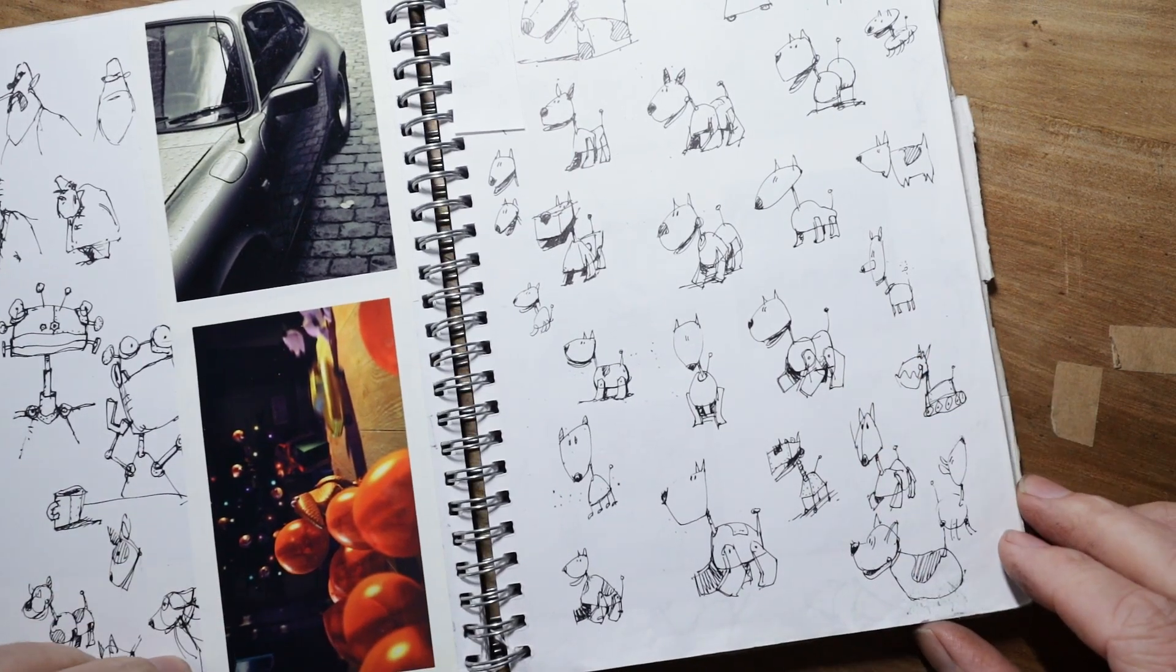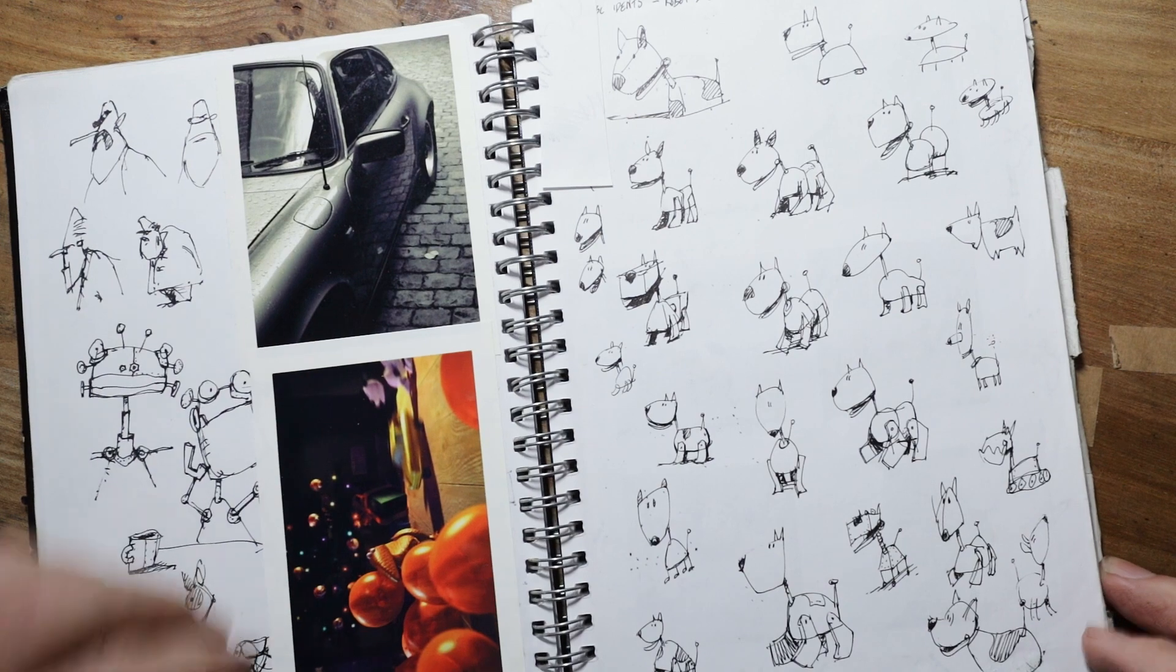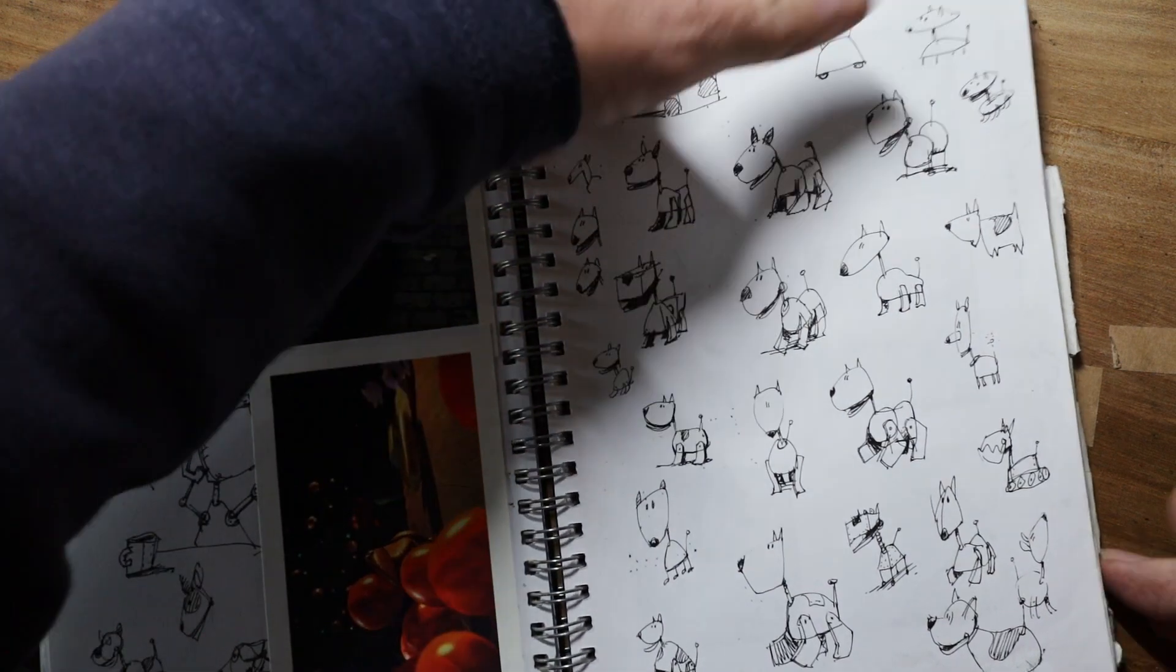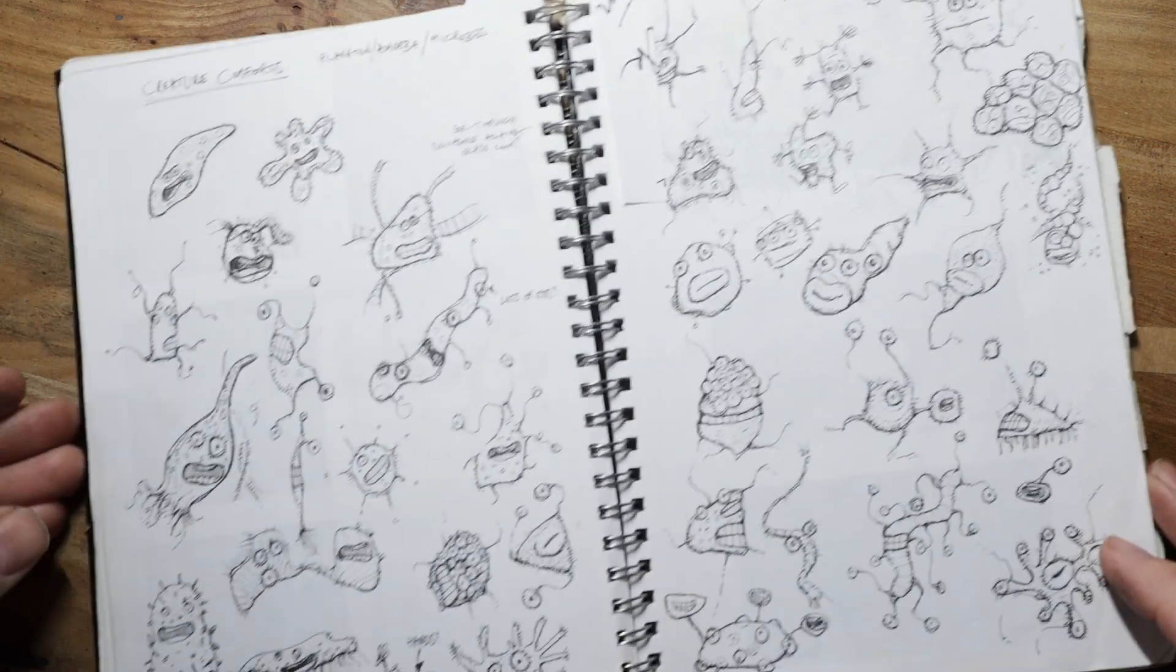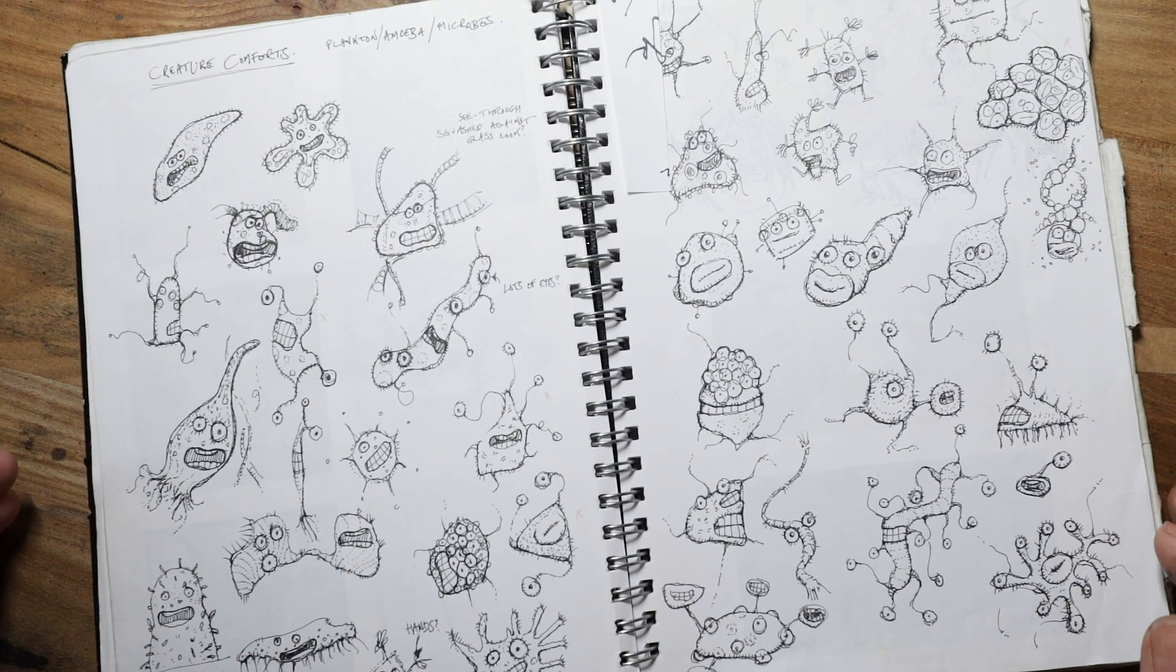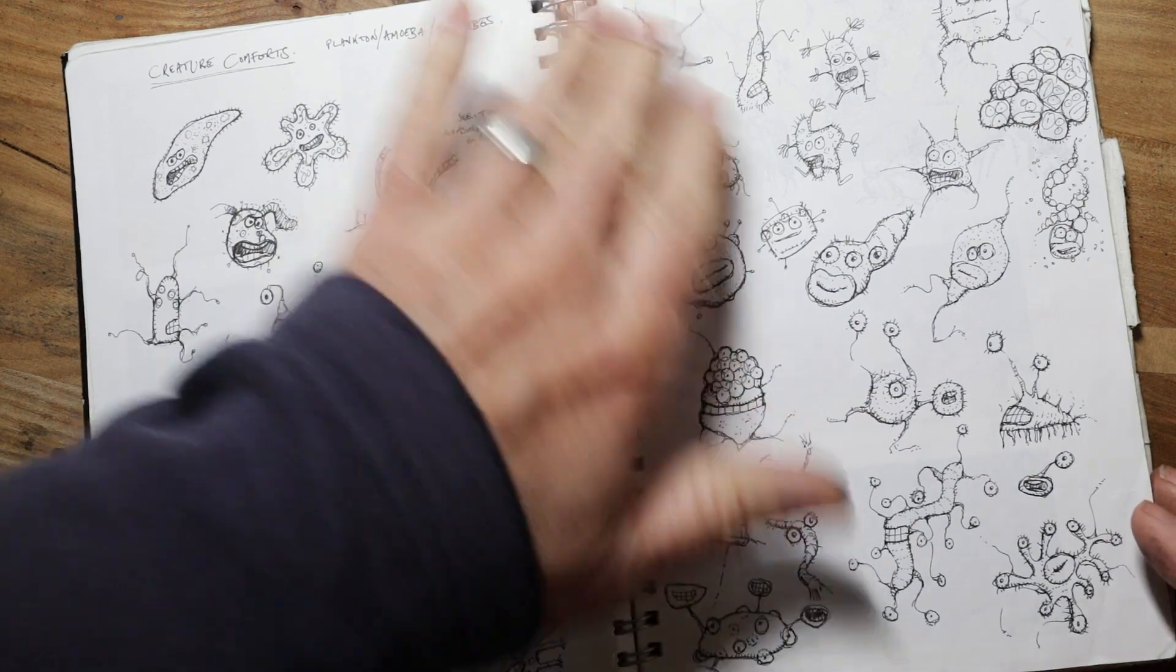If you look through my old Aardman sketchbooks, you'll see the pages are mostly full of tiny little thumbnail drawings. That's because part of my job as a director was to design the characters for the adverts or short films, whatever it was that we were working on.